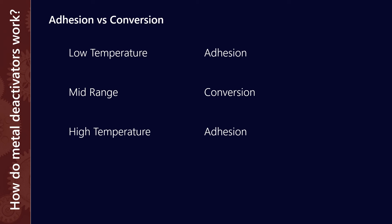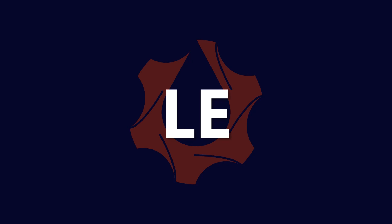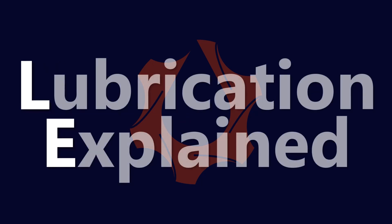Conversion additives usually break down at high temperatures, and particularly those with sulfur and phosphorus break down into acidic byproducts, which are undesirable because they raise the corrosive potential of the oil. So at high temperatures you need to go back to additives that bond by adhesion. The takeaway for operators is to be very careful to use a lubricant designed for the service you have. You can't take a lubricant with mid-range conversion-acting metal deactivators and use it in a much higher temperature application, because those additives will break down. This shows that lubricant formulations are a little more complex than maybe we give them credit for.